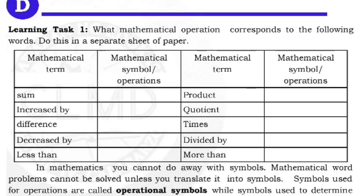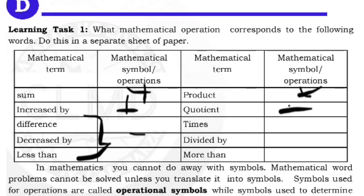Let's have Learning Task Number 1: what mathematical operation corresponds to the following words? Sum means addition; increase by means addition; difference, decrease by, and less than all mean subtraction — the symbol is minus. Product means multiplication, and quotient means division. Times means multiplication, and divided by means division.